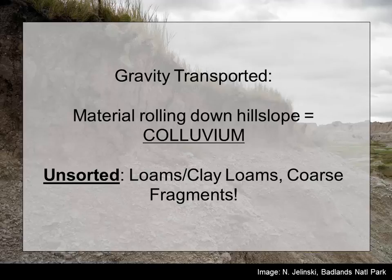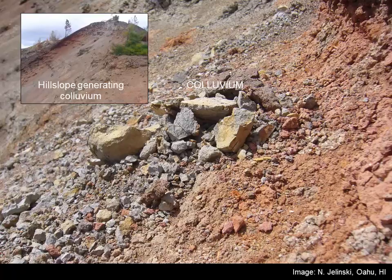Our last and probably least, at least on a large scale, parent material is colluvium — gravity-transported material rolling downhill. Colluvium generally only occurs at local scales: hill slope scales, at the bottom of slopes. A characteristic property of colluvium is that you can have coarse fragments rolling downhill, then slope wash, then maybe sands and clays, and then another period of coarse fragments rolling down. So these parent materials tend to be very unsorted, similar to glacial tills, with a lot of different particle sizes and coarse fragments.